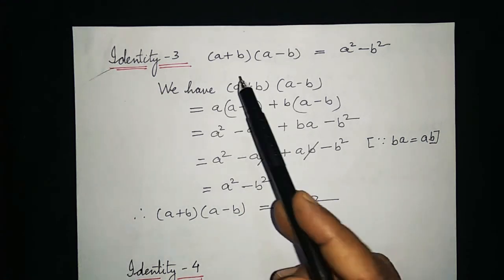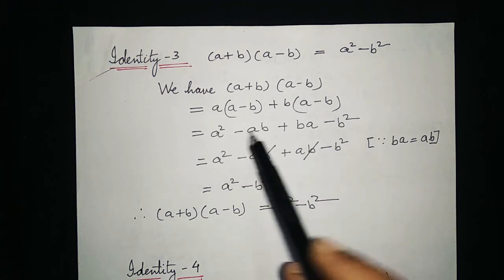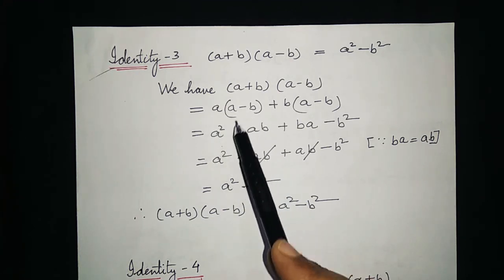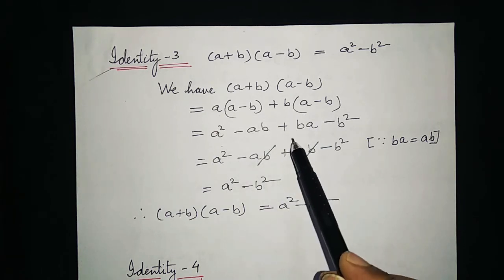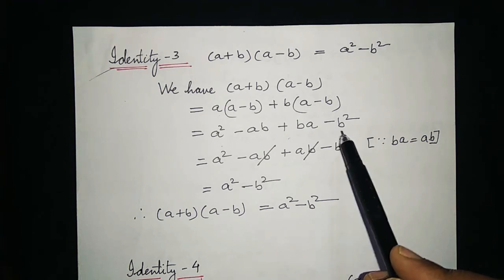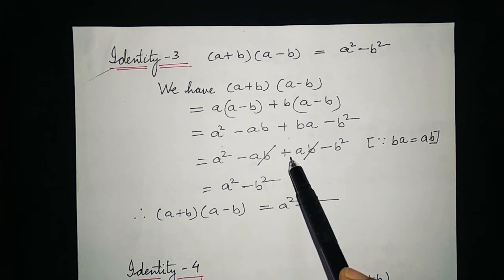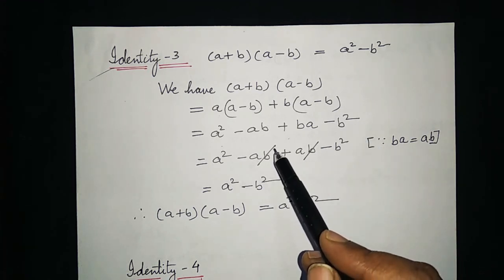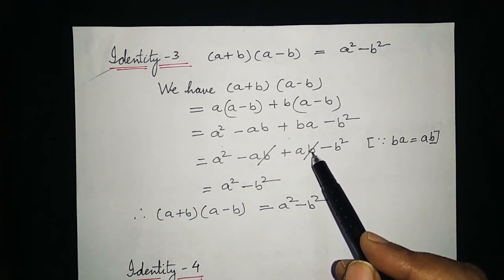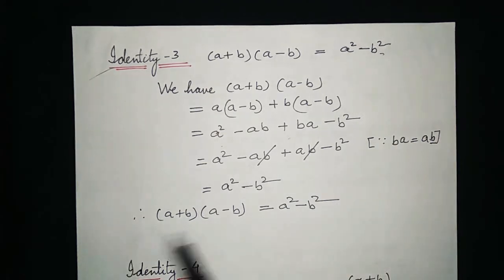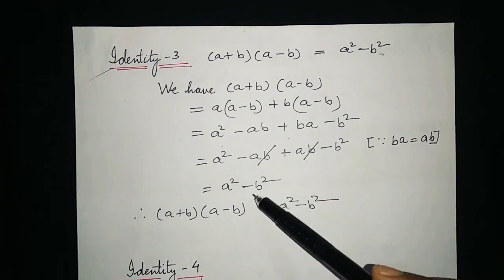Now we solve the left-hand side. a into a gives a squared, then a into b gives minus ab. Then plus b into a gives plus ba, and plus b into minus b gives minus b squared. So we get a squared minus ab plus ab minus b squared. Since minus ab and plus ab are like terms that cancel to zero, the right-hand side is a squared minus b squared. Like this we can prove the third identity: a plus b into a minus b equals a squared minus b squared.